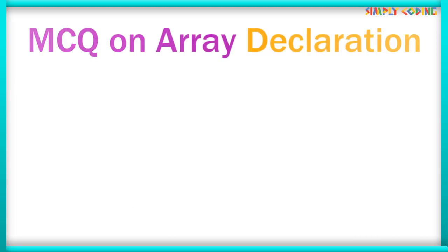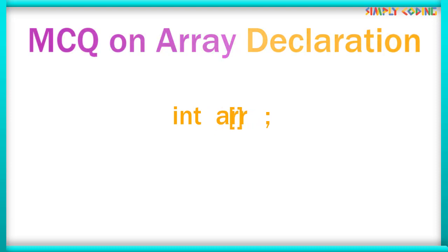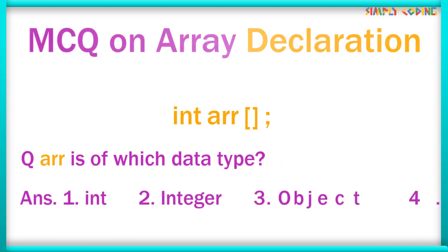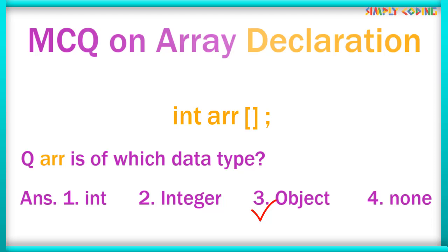Now let's see some MCQs on array declaration. We know we can declare any variable as a single dimensional array by putting a square bracket either before or after the name — both are valid. So in the first question, in this array declaration statement, what is the data type of array ARR? Here, an array is an object even though it can hold primitive types or object references. So here, object is the correct answer.